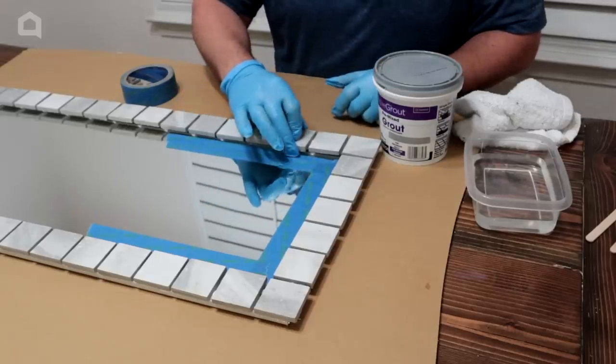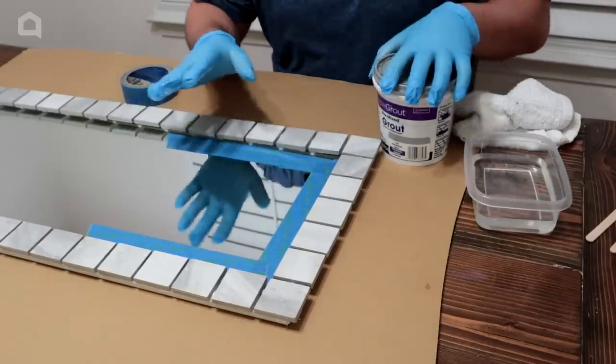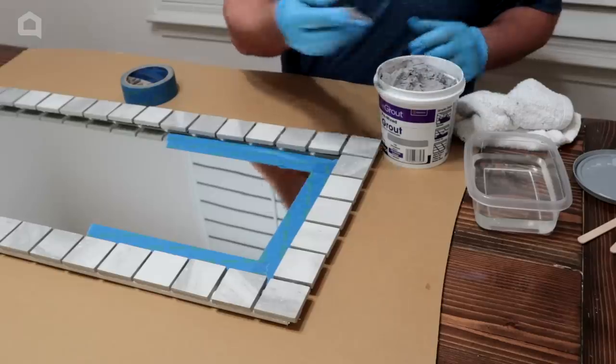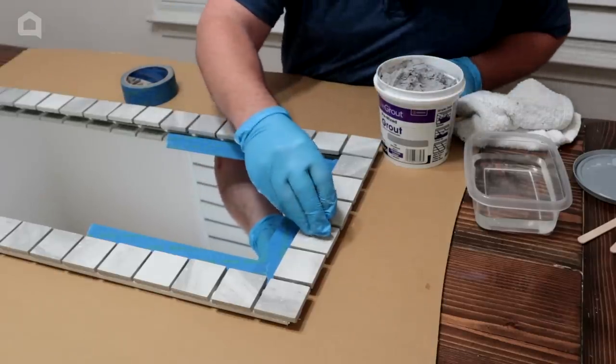Okay once our glue has dried the tile is on there really good and this just looks really good so far. Last thing we got to do is we've got to use grout. I went ahead and used the pre-mixed grout. Put some tape down and grouting is real easy.